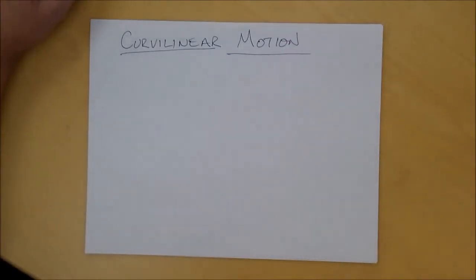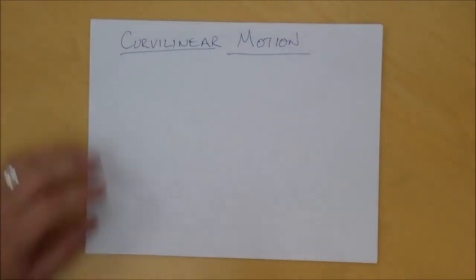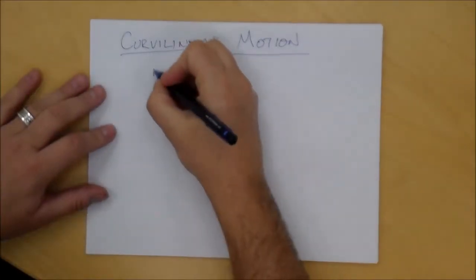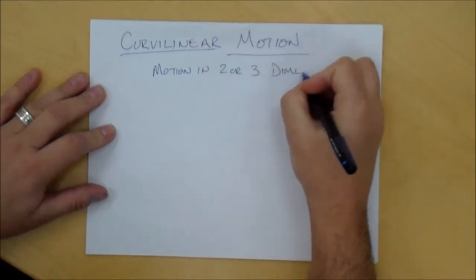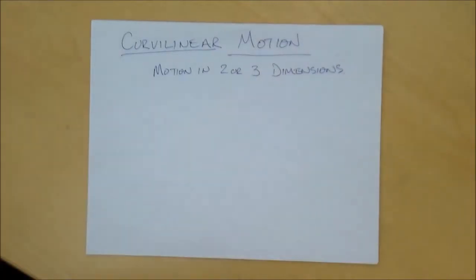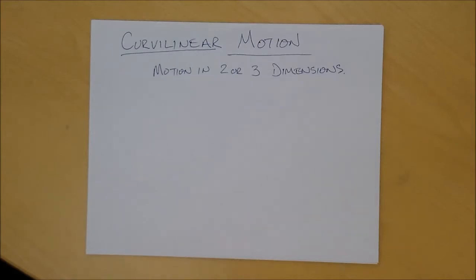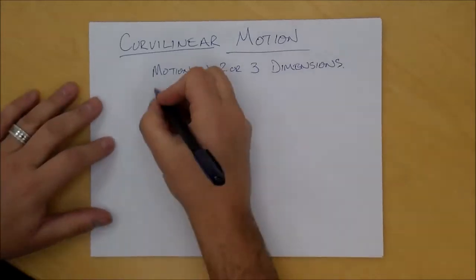Next up is curvilinear motion. This is motion of particles in two or three dimensions. Now that we're moving in two or three dimensions, we need a more expansive way of describing this motion in order to work with kinematics, and for that we need vector description.